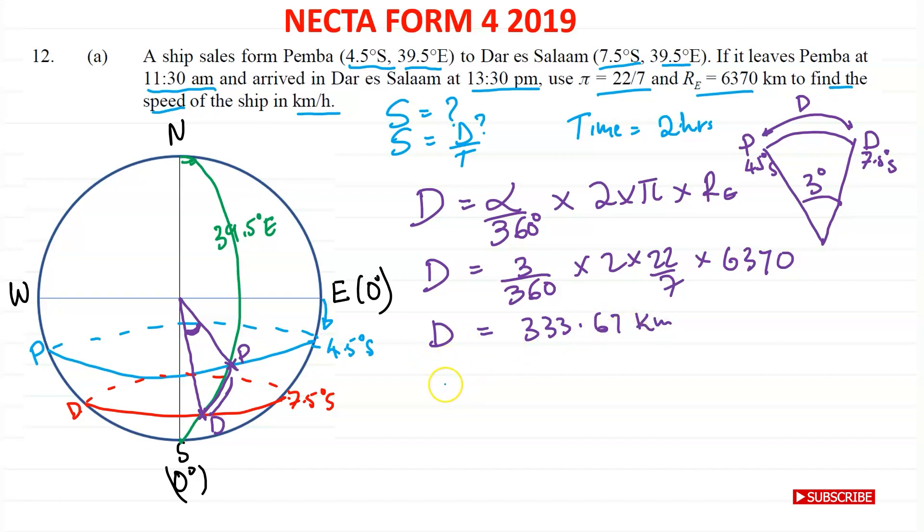We can go ahead and find speed. So speed is distance over time, as I said here. So distance is 333.67. And time is 2 hours divided by 2. And this gives you 166.84 kilometers per hour. Okay, so this is the answer for this question. Thank you for visiting and bye for now.